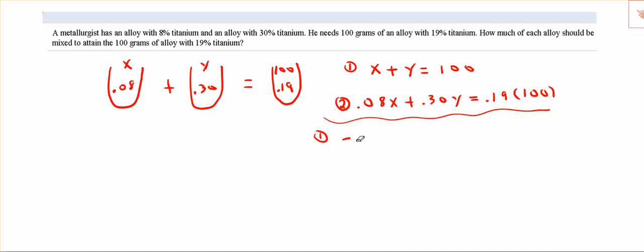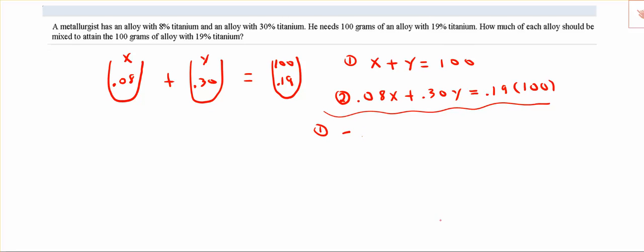Would give us negative 0.30X, negative 0.30Y, and 100 multiplied by negative 0.3 would give us negative 30. The second equation basically stays the same: positive 0.08X plus 0.30Y equals 0.19 times 100, which is simply 19.